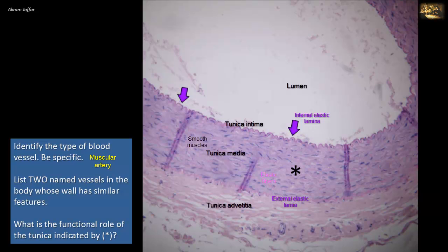As for the second part of the question, most of the named arteries in the body are muscular arteries, such as brachial artery, radial, ulnar, femoral, popliteal, tibial, to name but a few.